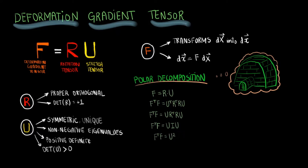This allows us to simplify the equation and arrive at U times U, that is, U squared. Thus, we reach our final definition. The stretch tensor U equals the square root of F transpose times F.